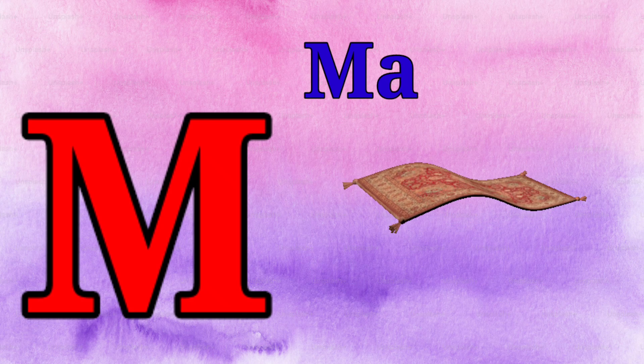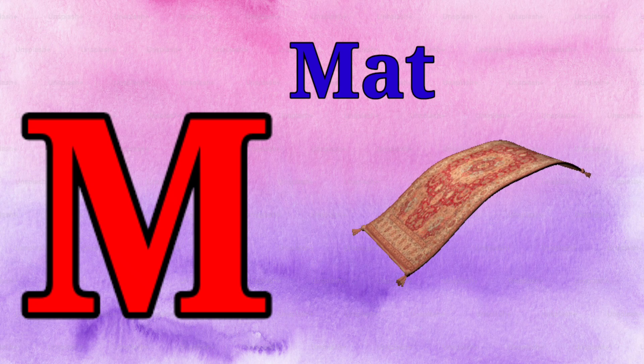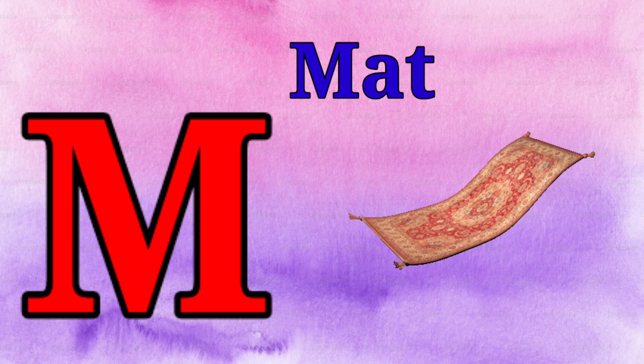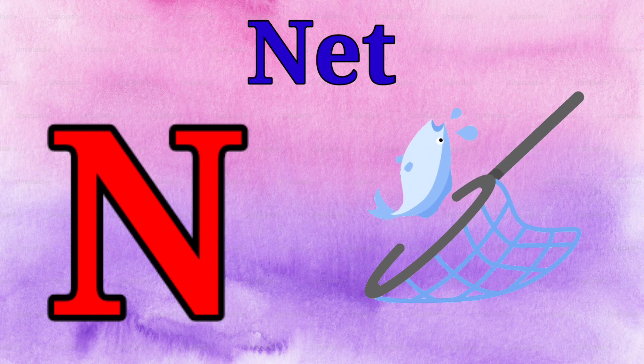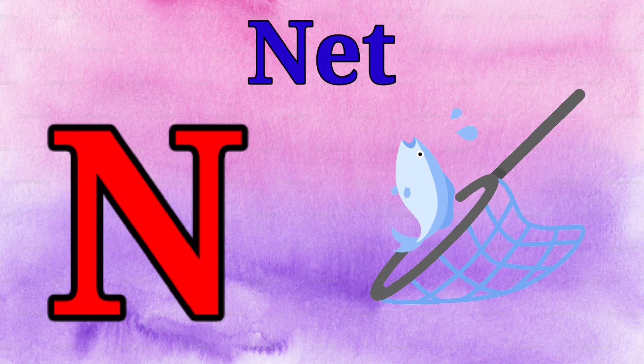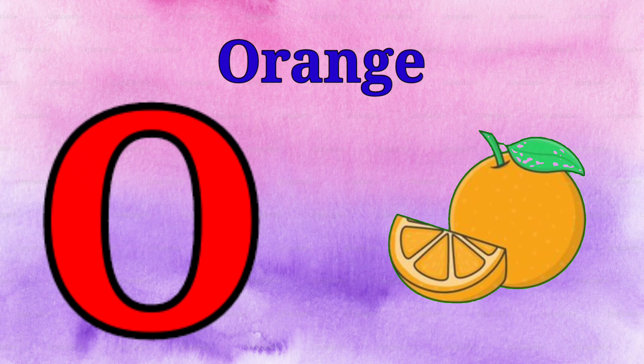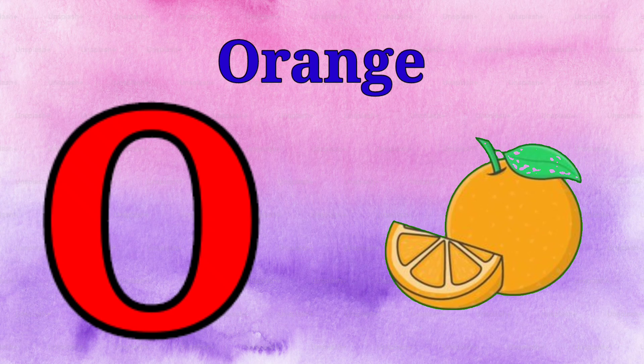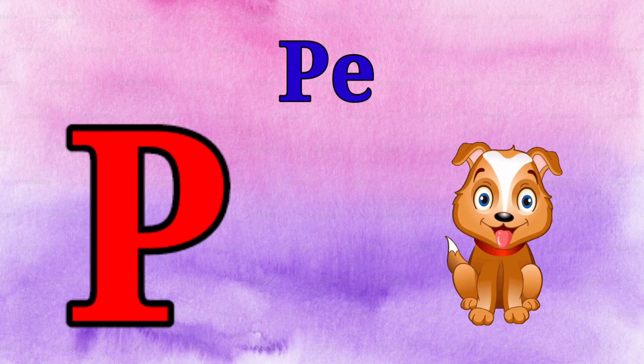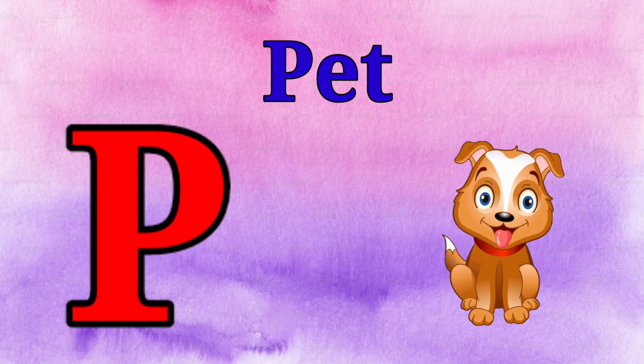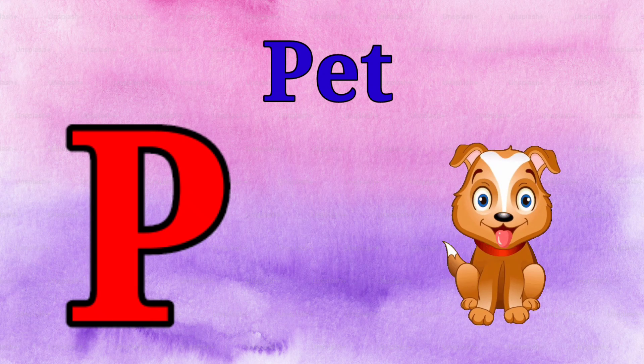M is for mat, m-m-mat. N is for net, n-n-net. O is for orange, o-o-orange. P is for pet, p-p-pet.